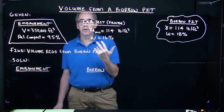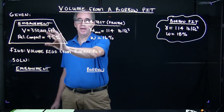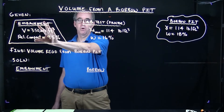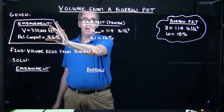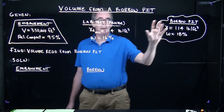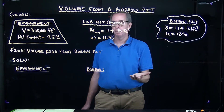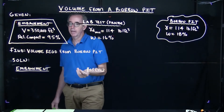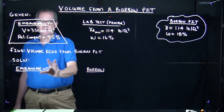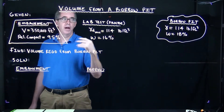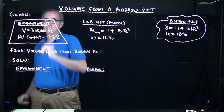Our question is very simple: if we need to have 350,000 cubic feet for our embankment project, how much do we need to extract from the borrow pit? The first step in our calculation is to figure out the dry unit weights for both the borrow pit and the embankment, starting with the embankment.